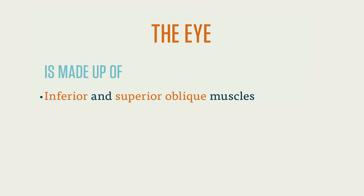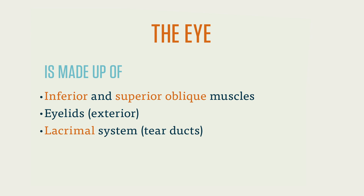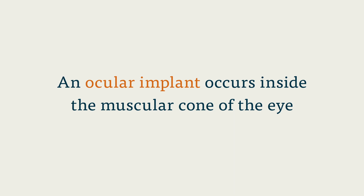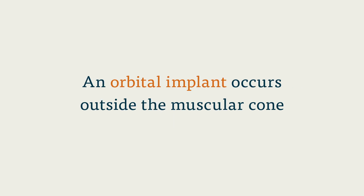Exterior to the eye are the eyelids and lacrimal system, or tear ducts. The first portion of the eye and ocular adnexa subsection focuses on procedures of the eyeball itself. Here you'll find codes for removal and repair of the eye and also implants. Note that an ocular implant occurs inside the muscular cone of the eye — inside the set of muscles listed above, including inside the eye — and an orbital implant occurs outside the muscular cone. Recall that the orbit of the skull is the cavity where the eye is situated.